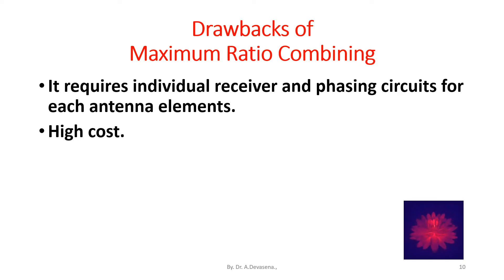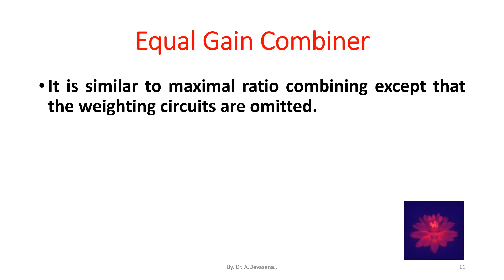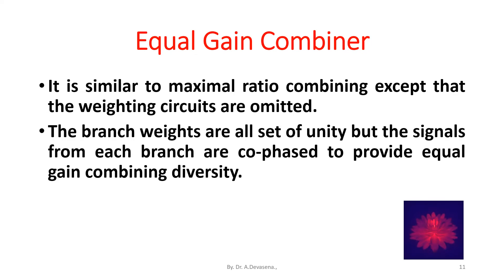Equal gain combiner. It is similar to maximal ratio combining, except that the weighting circuits are omitted in equal gain combiner method. The branch weights are all set to unity, but the signals from each branch are cophased to provide equal gain combining diversity.